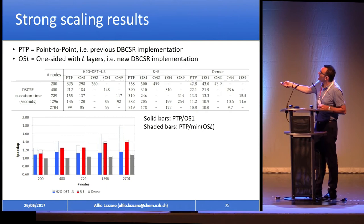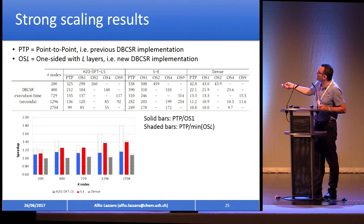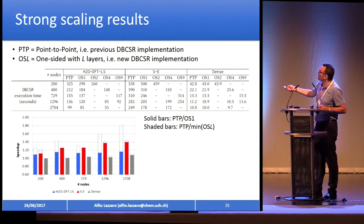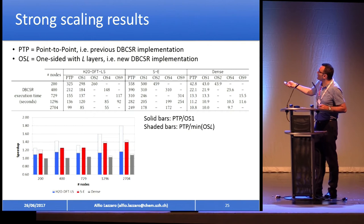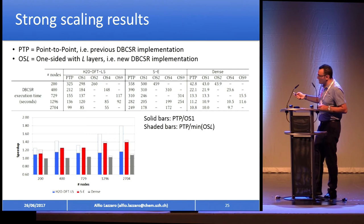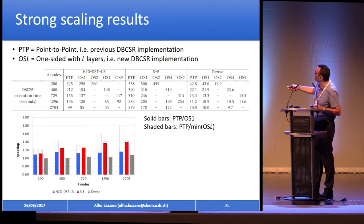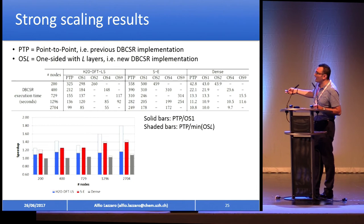These are the results. PTP means point-to-point, and the other is one-sided; L is the number of layers. This is a strong scaling result: we take the three benchmarks and change the number of nodes. For different node counts, different numbers of layers can be fit given the topology requirements. For example, 729 nodes was the first case where you can run nine layers — it's a 9×9×9 topology. 1296 nodes allows four layers or nine layers. The solid bar is point-to-point divided by single-layer one-sided; the shaded part shows when layers are applied.